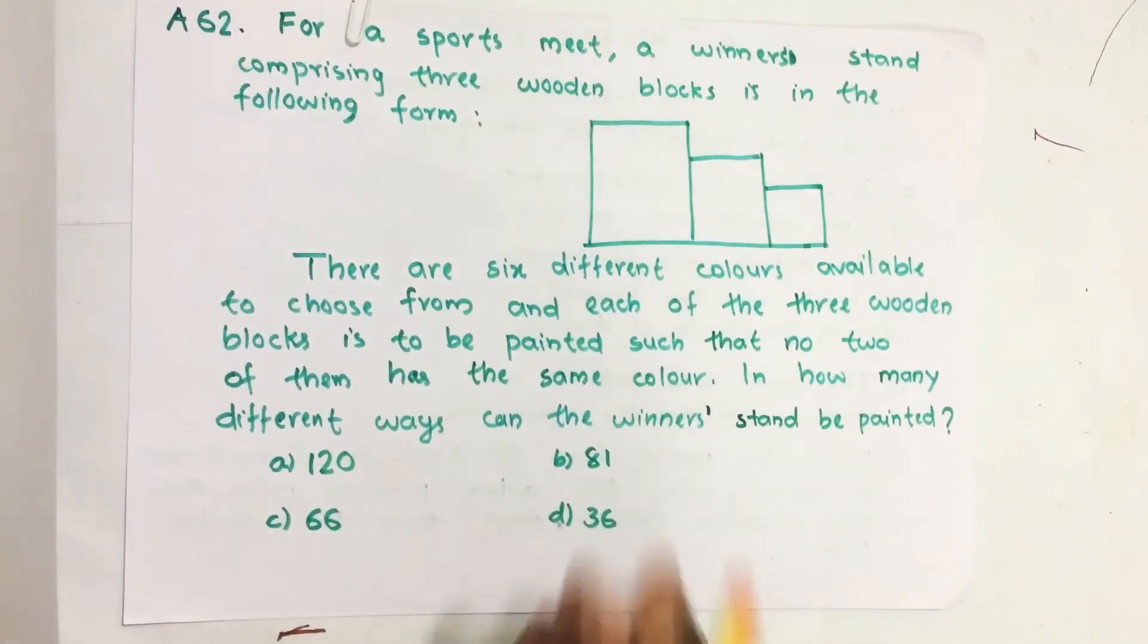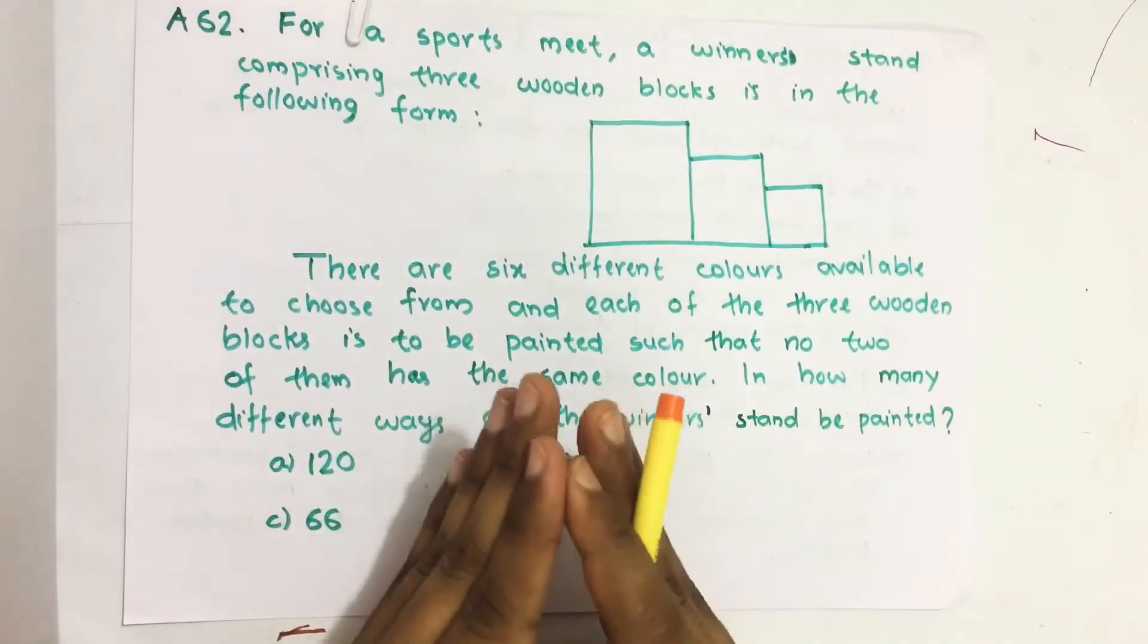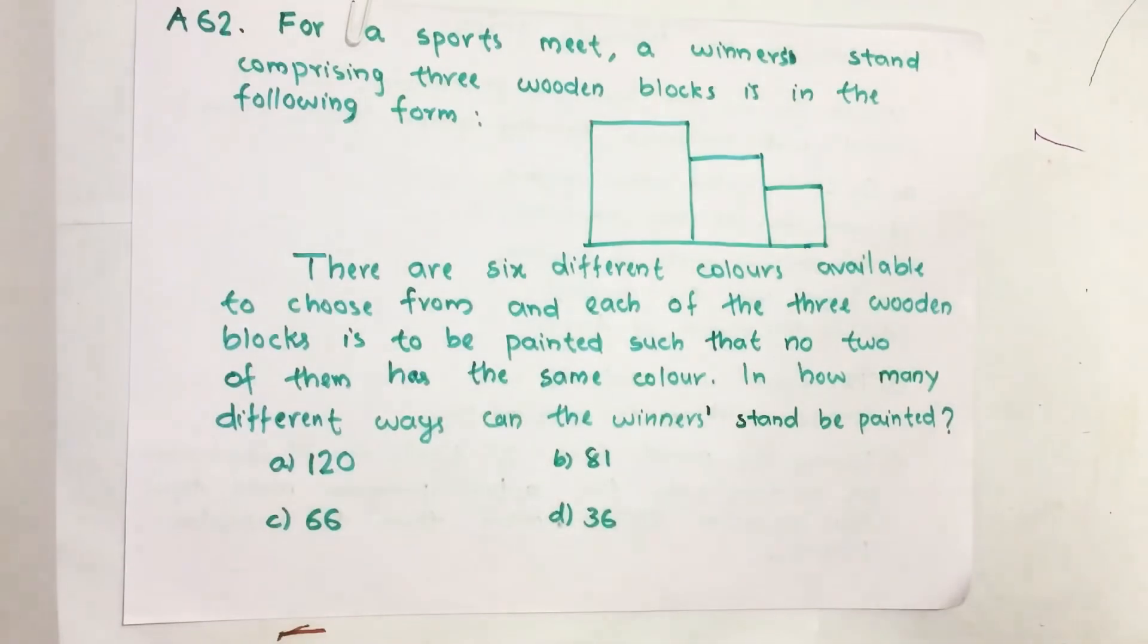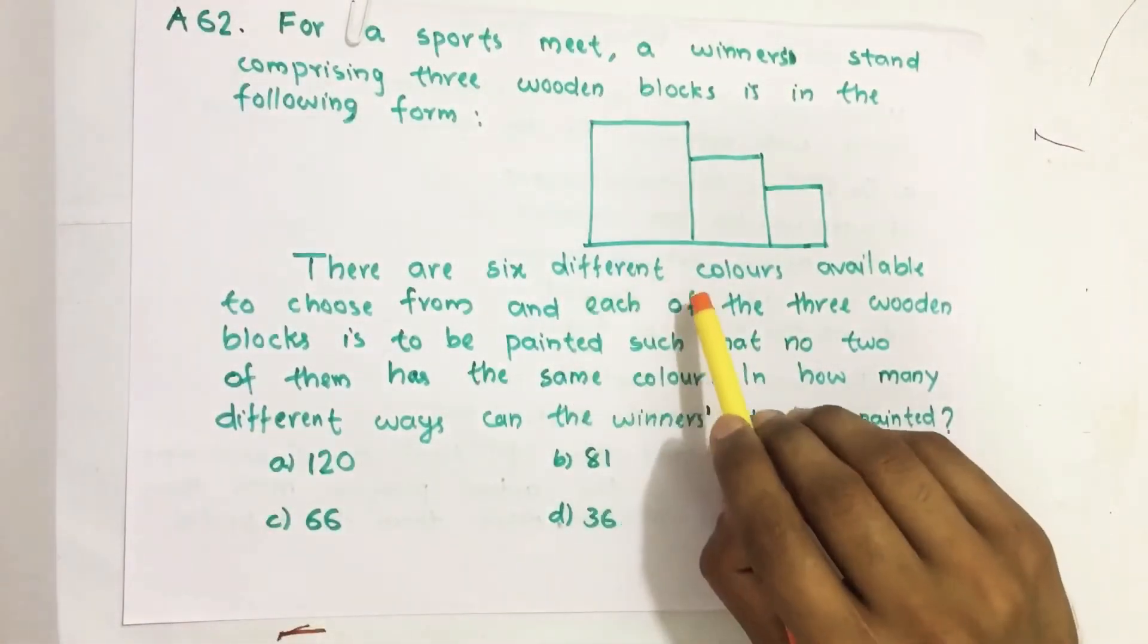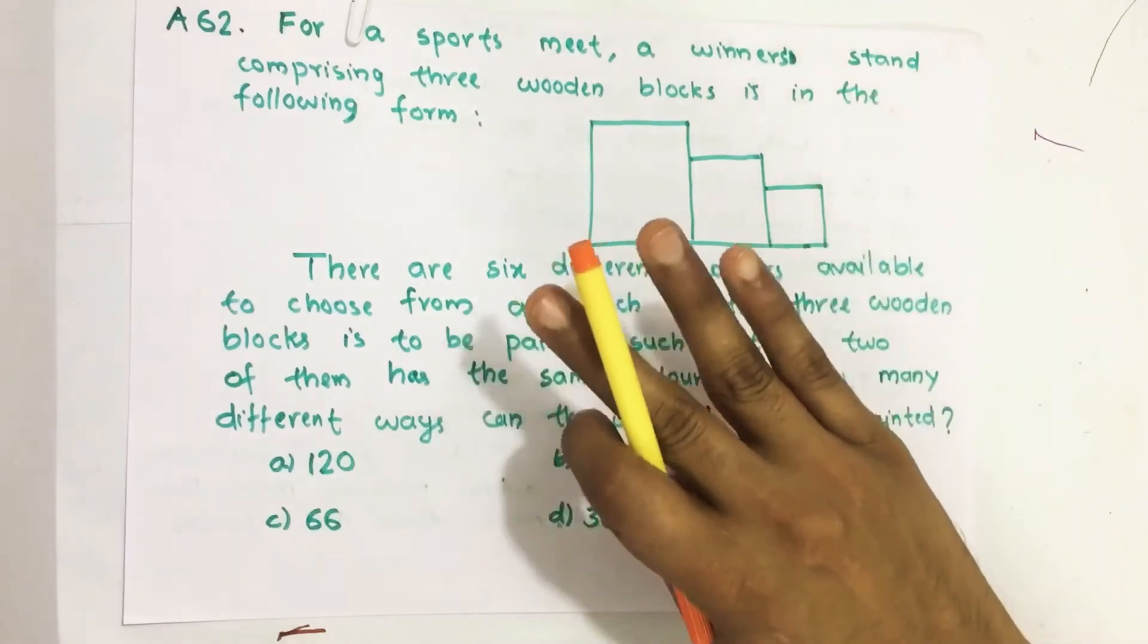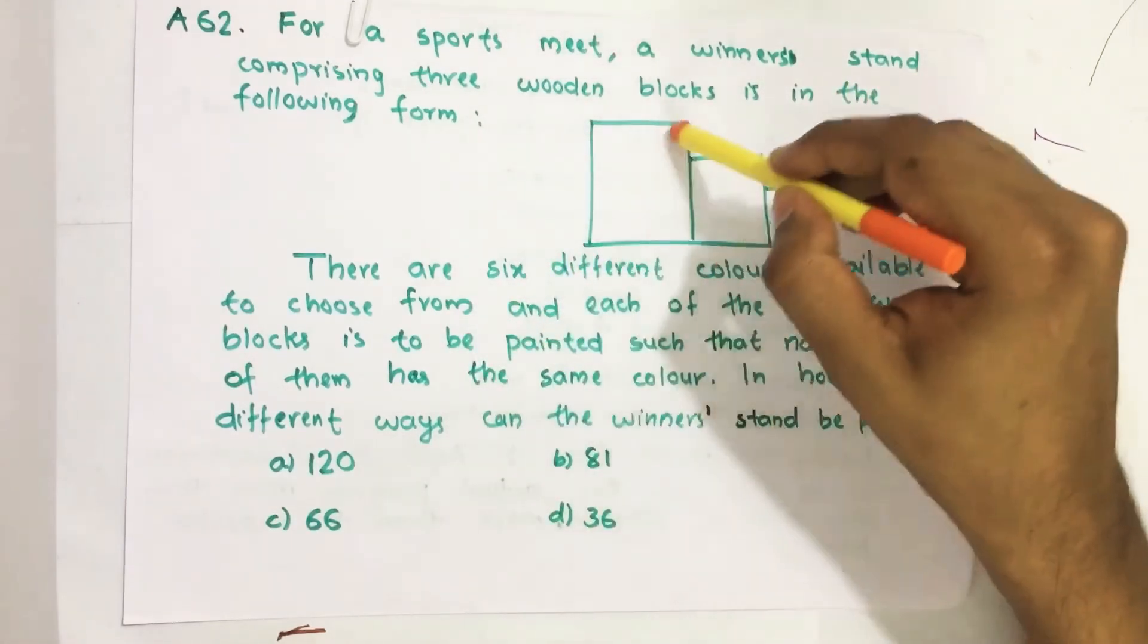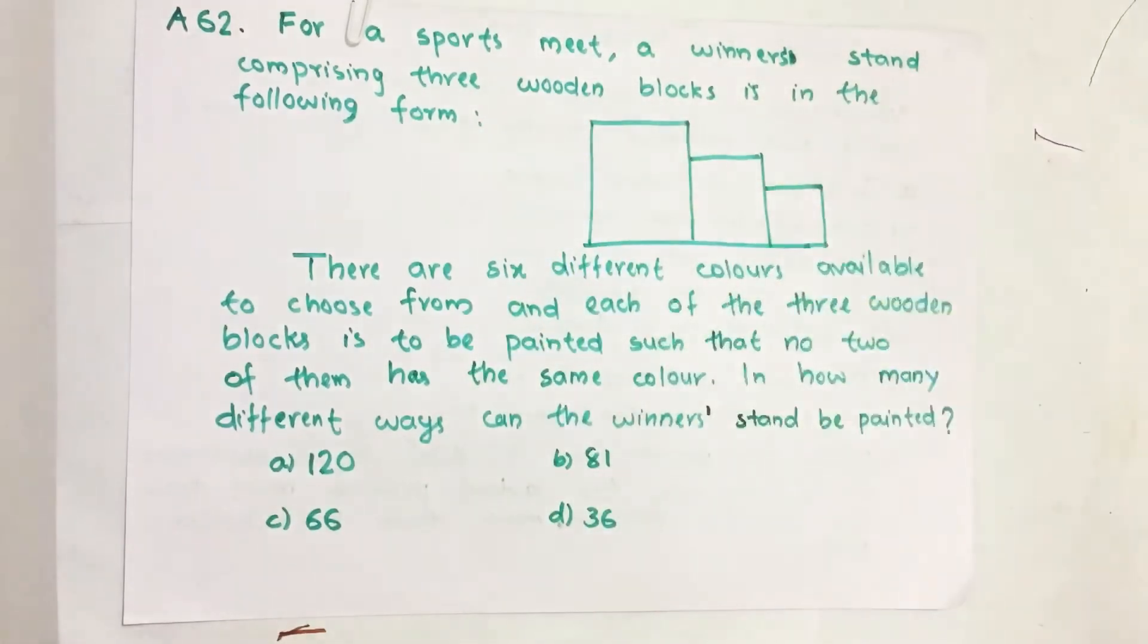Then I solve this question using permutation equation. So let us see how we can solve this. Here we have six colors. So out of these six colors we have to choose three colors first. Then we have to paint on this wooden block.